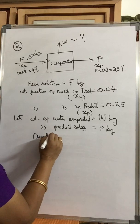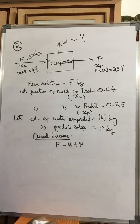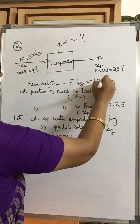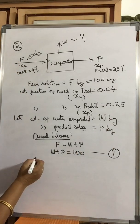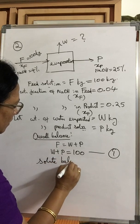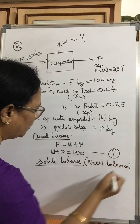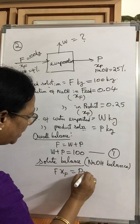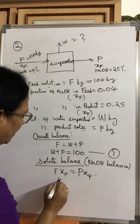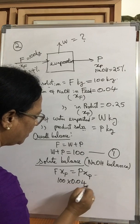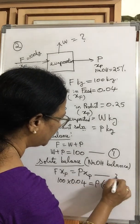Overall balance: F = W + P, so W + P = 100. Let this be Equation 1. Solute (NaOH) balance: F·XF = P·XP, that is 100 × 0.04 = P × 0.25. Let this be Equation 2.